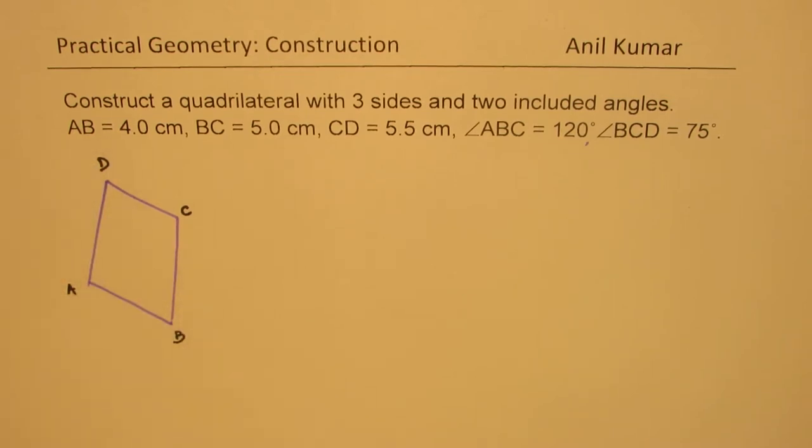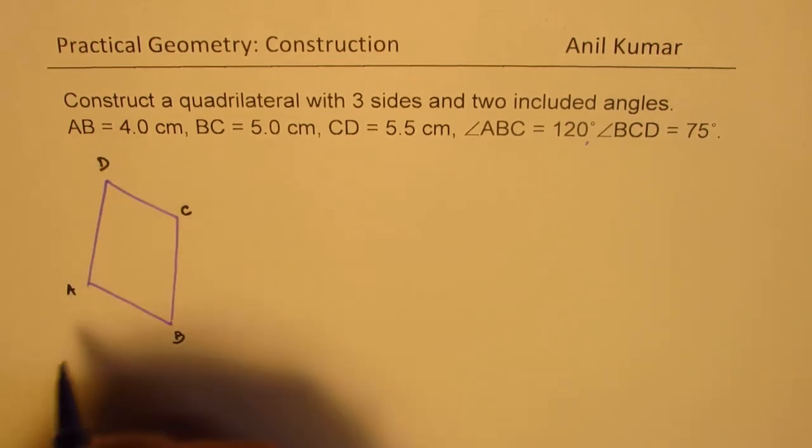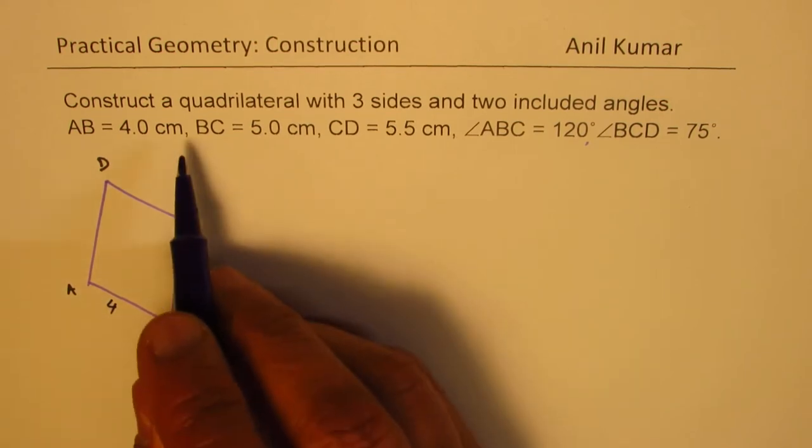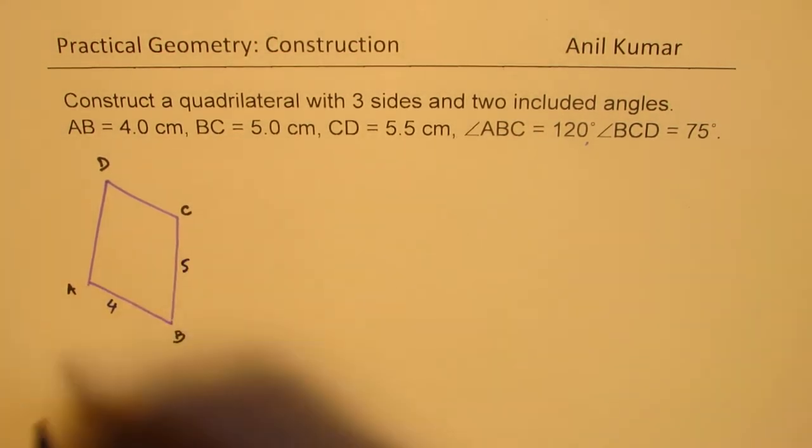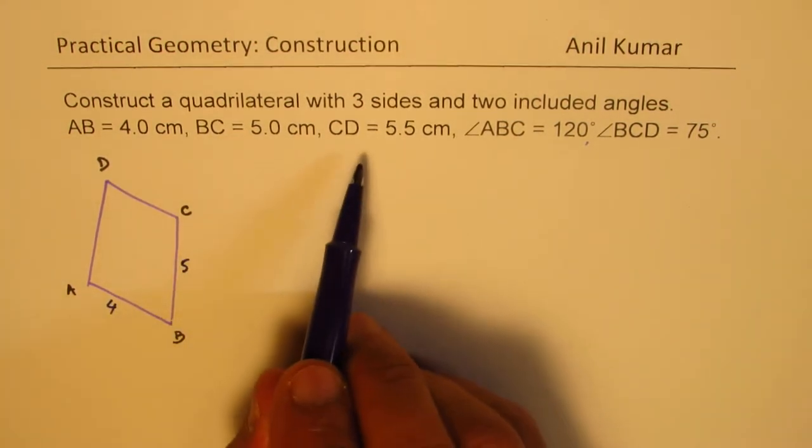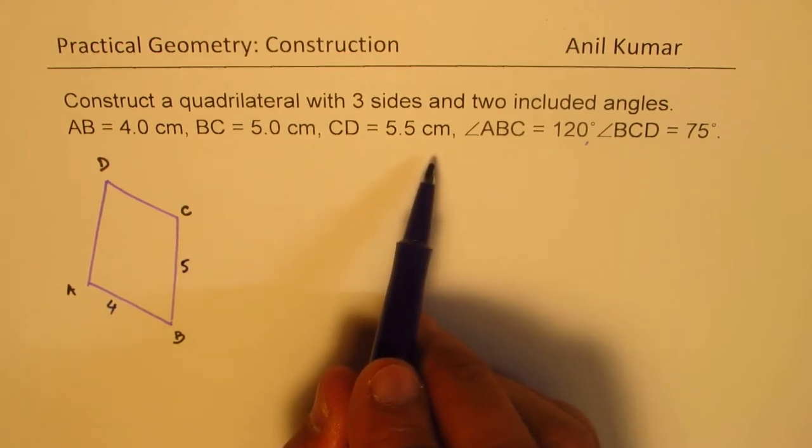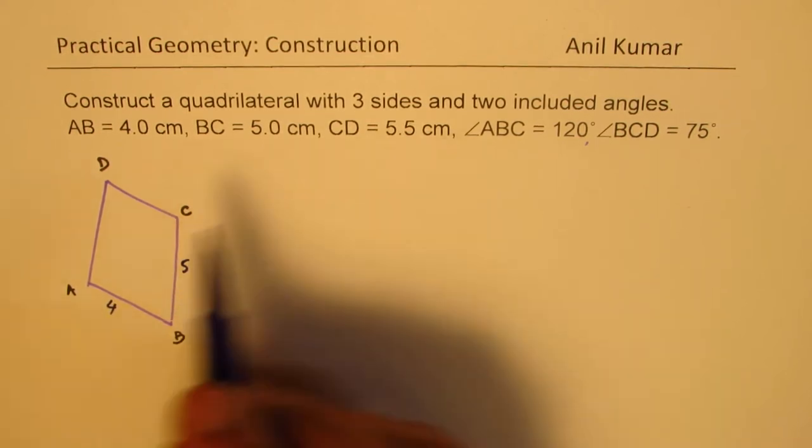Now write down what is given to you. We are given AB is 4 cm, BC is 5, and the two included angles.